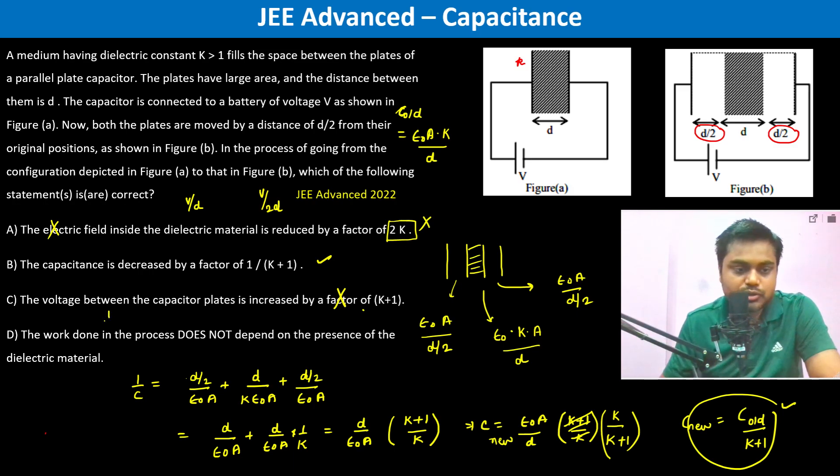Initially the energy stored was (1/2)CV² = (1/2)(ε₀Ak/d)V². Now the energy stored is (1/2)(ε₀Ak/d)(1/(k+1))V². So work done is this minus this, so there is work done, so it depends on the dielectric material. Therefore the only answer which is correct is B. Thank you.